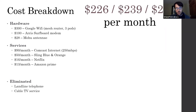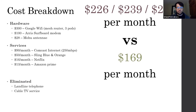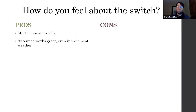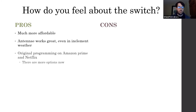She went from her current cost to $169 per month. After a month or two after the switch, I interviewed her. The first thing: it's much more affordable — she's saving over $100 a month on television and internet. The antenna worked great, even in inclement weather, though this is not always the case — if you're in a more rural area it can be more difficult. She really liked the original programming on Amazon Prime and Netflix. There are just more options — not just the typical primetime programming from major networks. She was able to branch out and find new things.